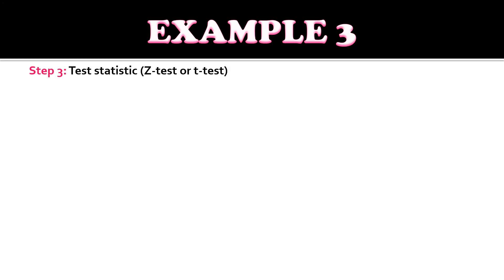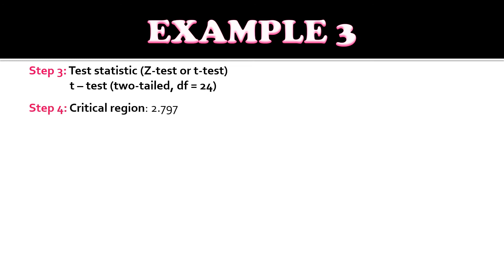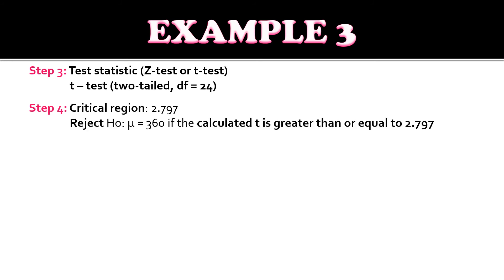For step three, since the sample size is less than 30, we will use a T-test with degrees of freedom of 24 (n minus 1), for a two-tailed test. For step four, we identify the critical region. Under degrees of freedom 24 and a significance level of 0.01, the critical value is 2.797. We reject the null hypothesis — mean equals 360 — if the calculated t is greater than or equal to 2.797.